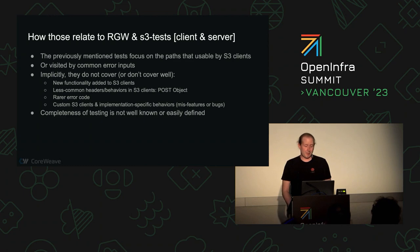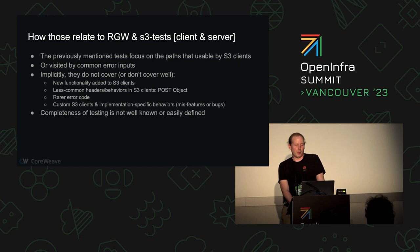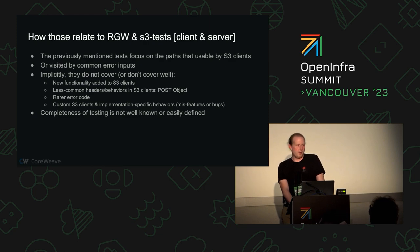Previously mentioned tests have focused on what one S3 client — Boto — does, or the error paths around that. They don't cover things in S3 clients that aren't well supported yet. For example, if you do a get-object there is a header you can include to say: 'I know I made this a multi-part upload originally, can I have the original parts back?'